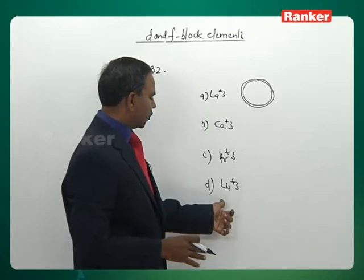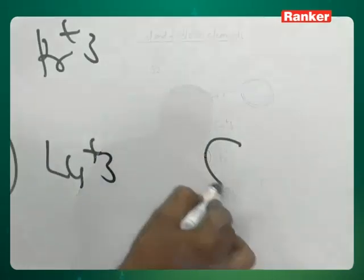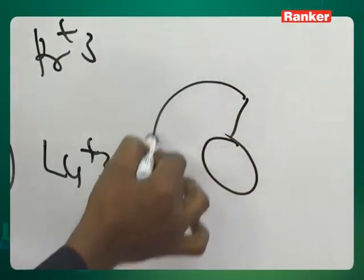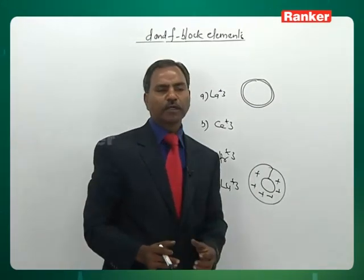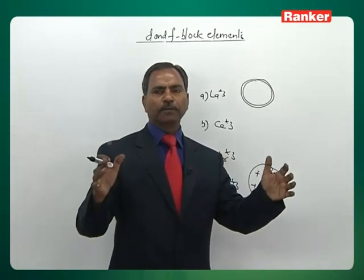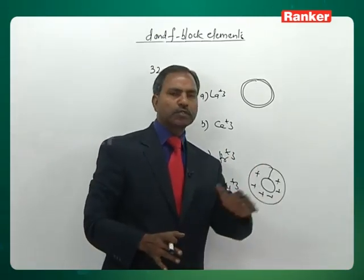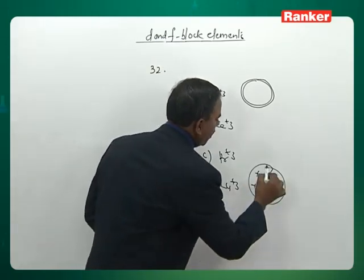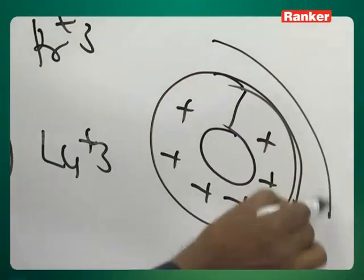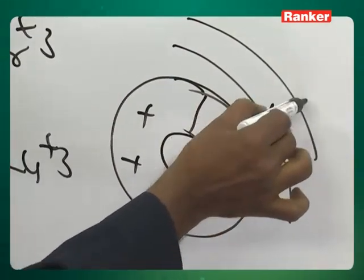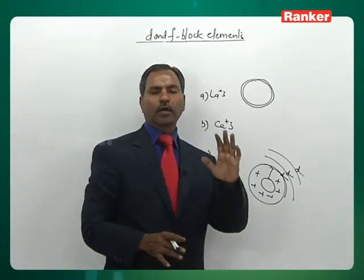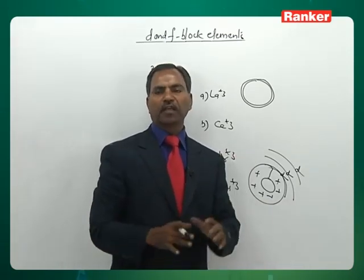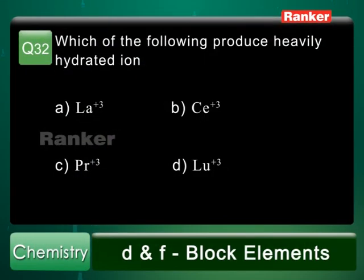Coming to the fourth option, lutetium: Lu³⁺ is very small in size, so it has a greater charge density. Any ion with smaller size and greater charge density can accommodate more water molecules through strong electrostatic force — not only one layer but first, second, and third layers of water molecules. Therefore Lu³⁺ is heavily hydrated, and the answer for question 32 is D.